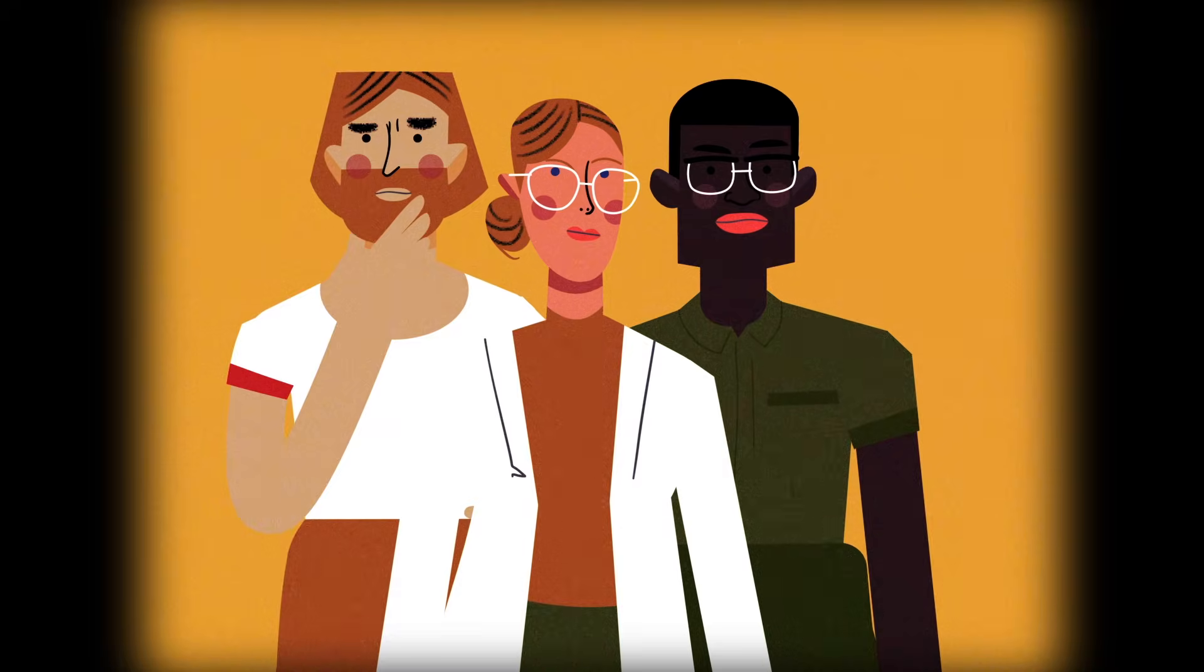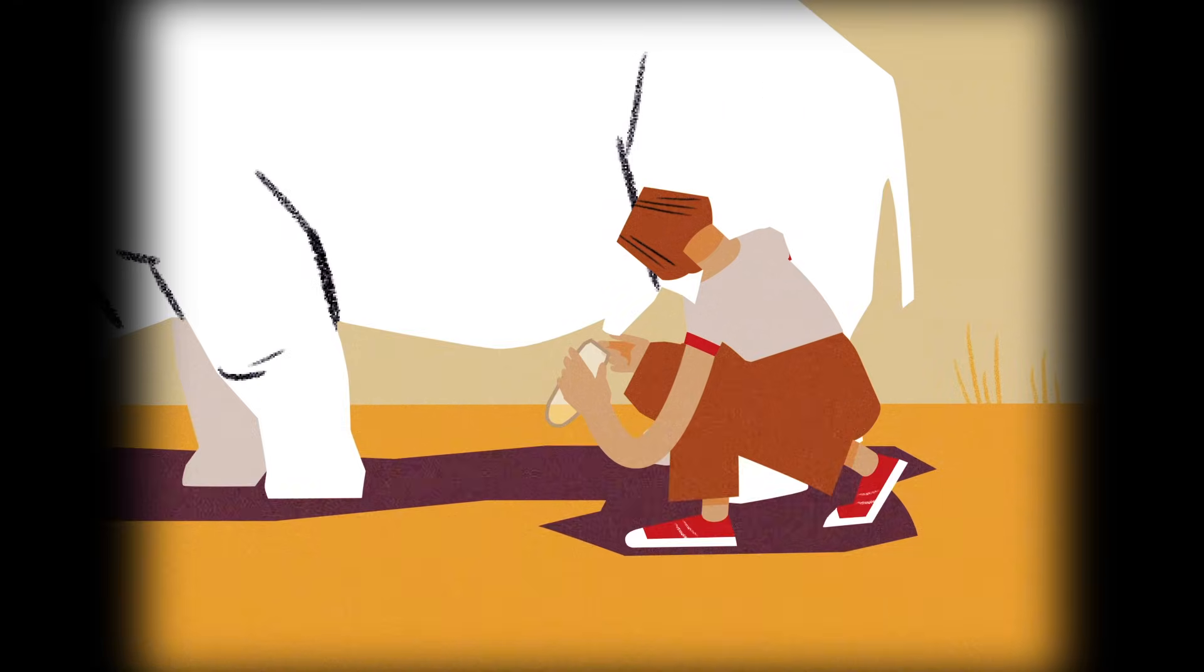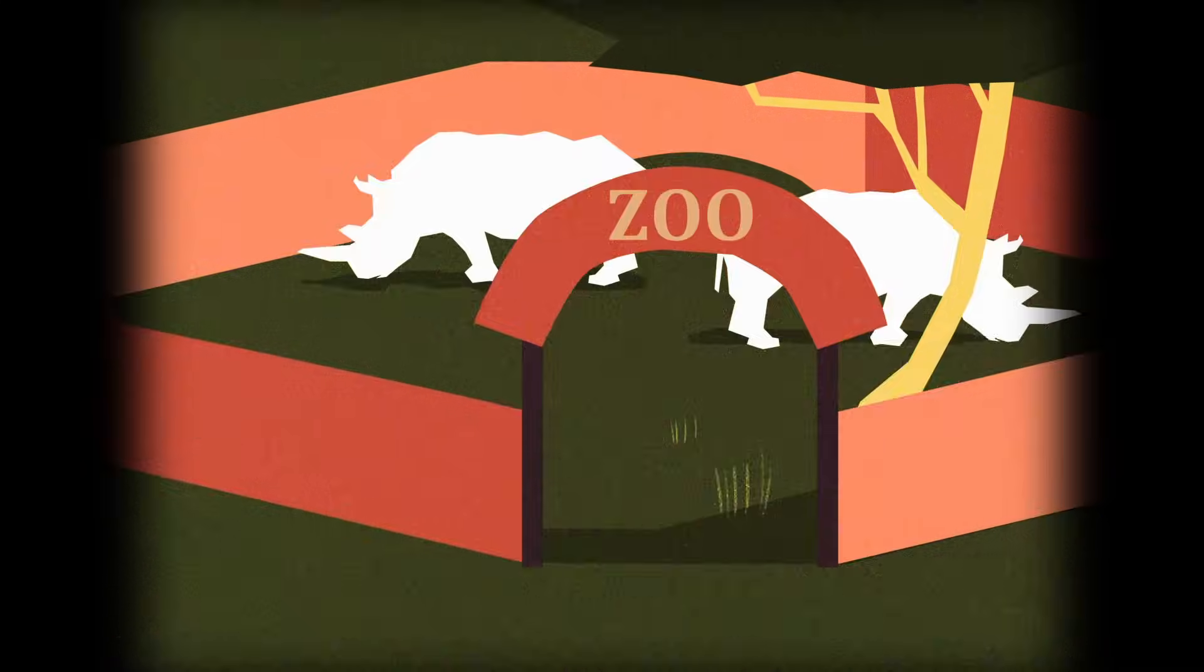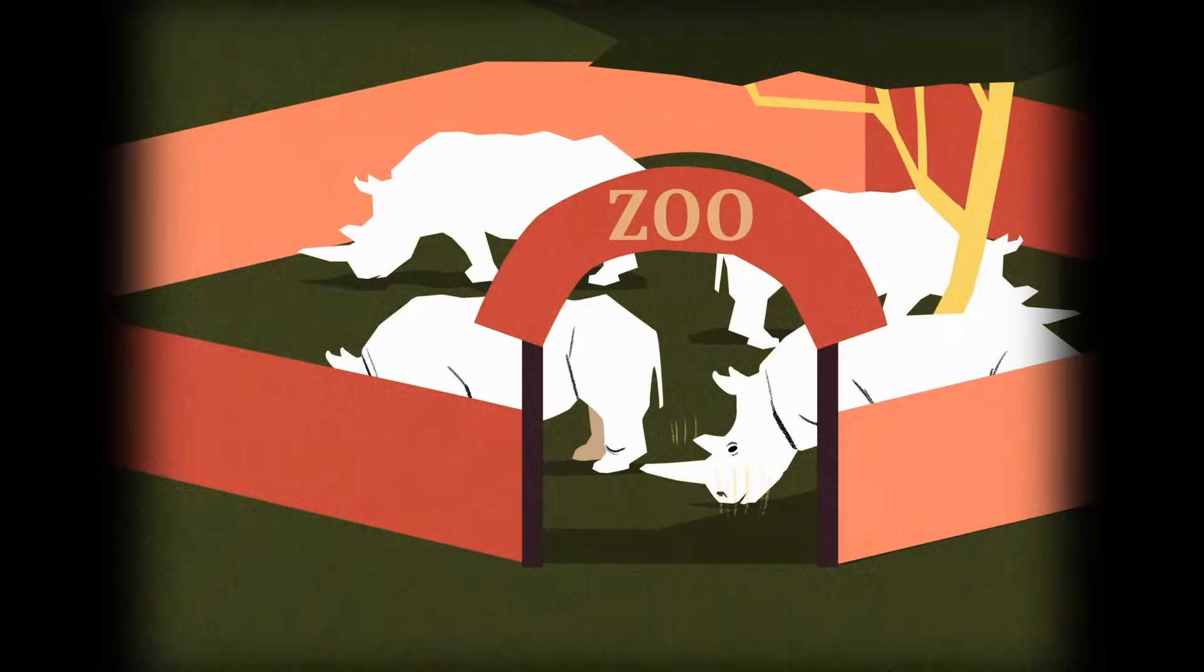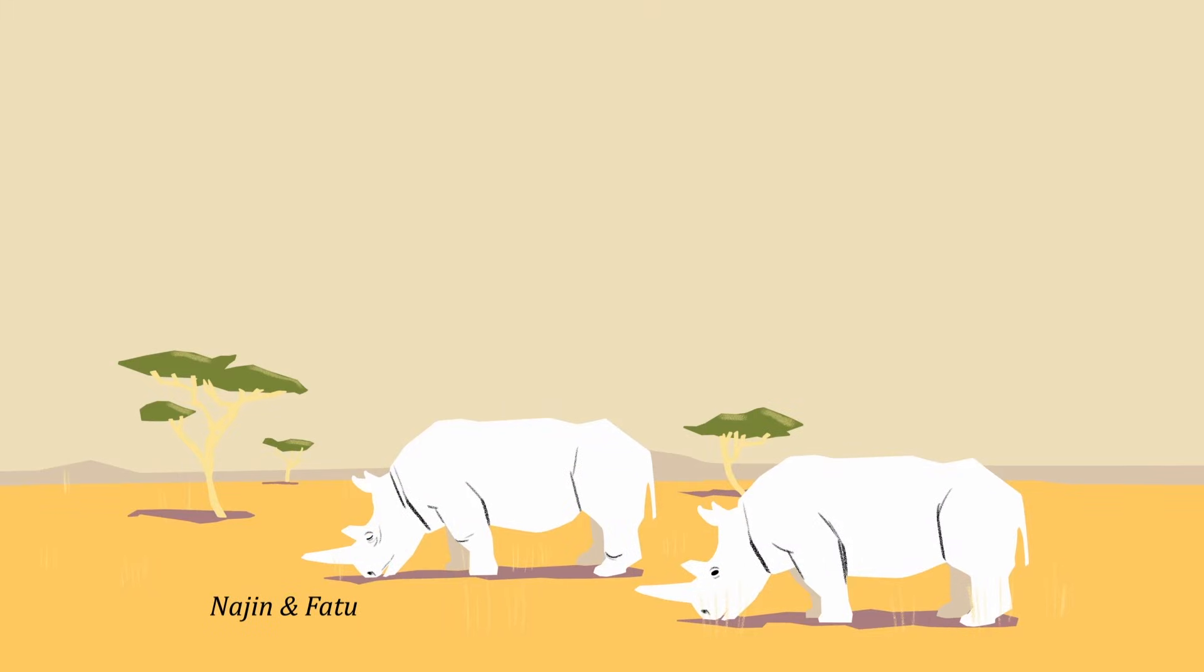Concerned conservationists began trying to breed them in captivity in the 1970s, collecting and storing semen from males. Only four rhinos were ultimately born through the ambitious breeding program. Najin and her daughter Fatu were the last two.